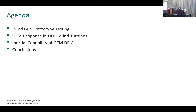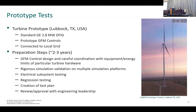What is the expected grid-forming response of these DFIG wind turbines, and we'll discuss the inertia and inertial capability. GE has been working over the last few years on a standard 2.8 MW turbine — one of our workhorse wind turbines — and we've started implementing prototype grid-forming controls on top of that. The prototype we have is in Lubbock, Texas, connected to the local grid — not a grid emulator — it's an actual wind turbine running that can be turned into grid-forming mode.